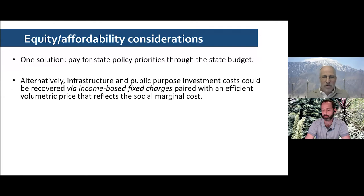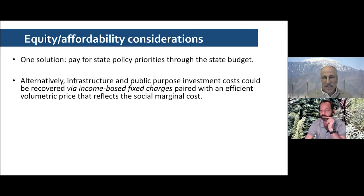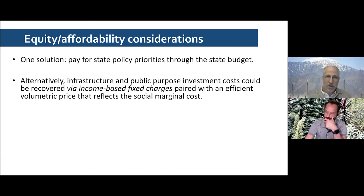Alternatively, we could recover these costs through a fixed charge. In Australia, I believe you already have significant fixed charges; ours would be more significant. Fixed charges are also very regressive — they charge the same amount for every household if they don't vary across households. For that reason, advocates for low-income households have historically opposed fixed charges. But that's changing, and our proposal tries to lower volumetric rates for efficiency while overcoming the equity problems from both high volumetric rates and uniform fixed charges.